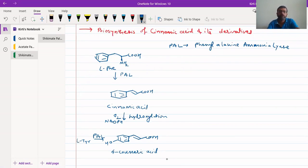Then this 4-cumeric acid can further undergo hydroxylation in presence of O2 and NADPH. Where we had an OH here and another OH will be coming over here, characteristic ortho-hydroxylation for shikimic acid. This will be giving us caffeic acid.